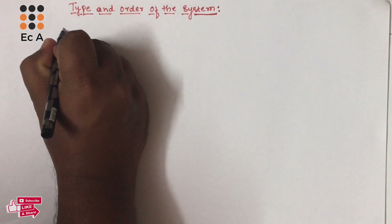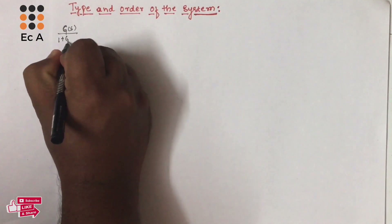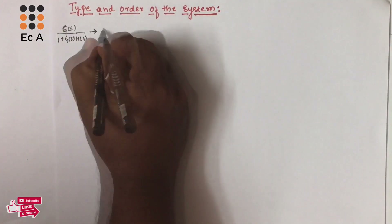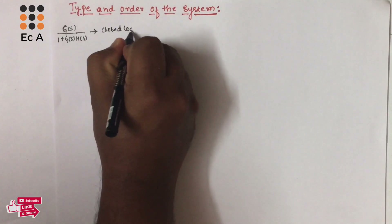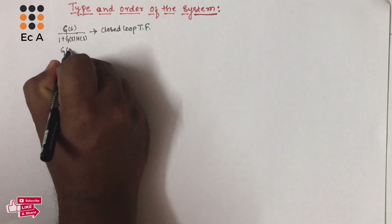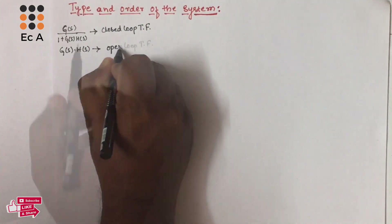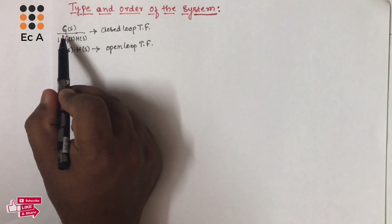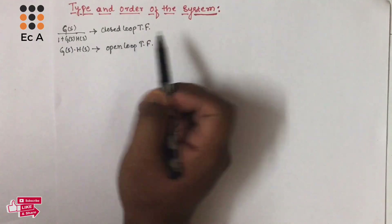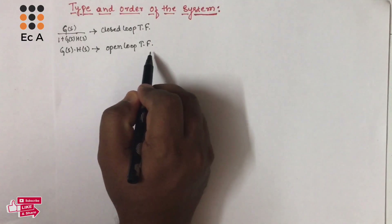If we write the transfer function as G(s) divided by 1 plus G(s) into H(s), we will call this as closed loop transfer function. And if we take the transfer function as G(s) into H(s), we will call this as open loop transfer function.